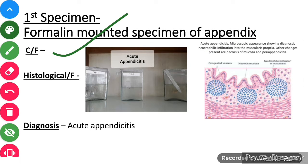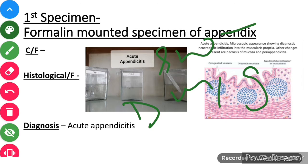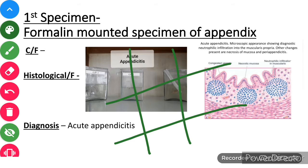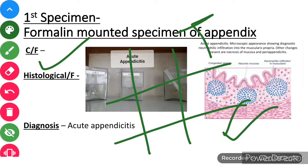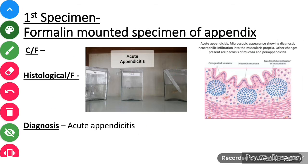Now, what are the clinical features? First, the appendix is swollen, dull, with granular and grayish-white exudate on the surface. Because of the white exudate, we say it divides the abdominal cavity. In clinical features, there is pain in the lower right quadrant, plus rebound tenderness on touching.